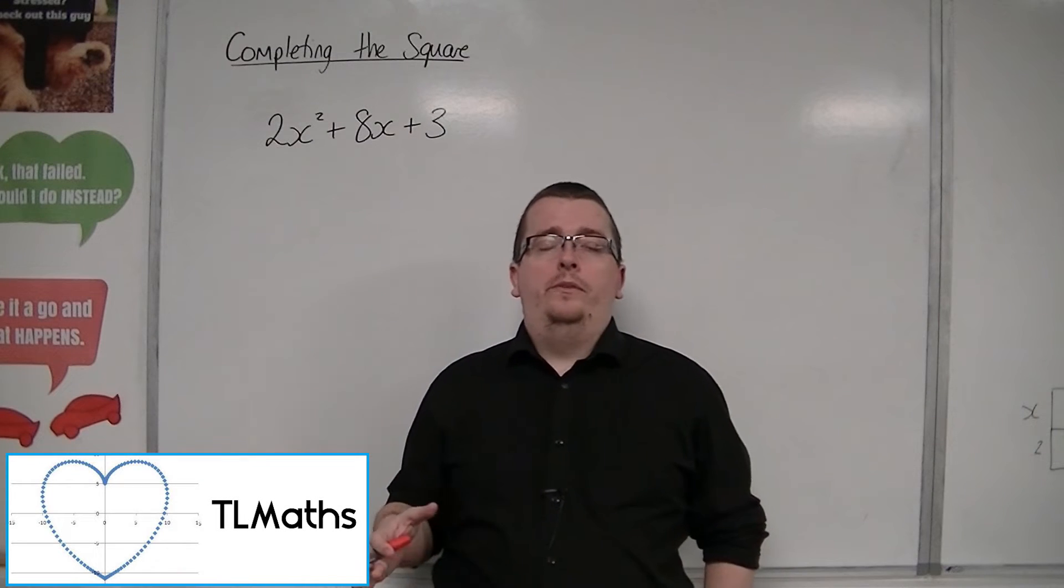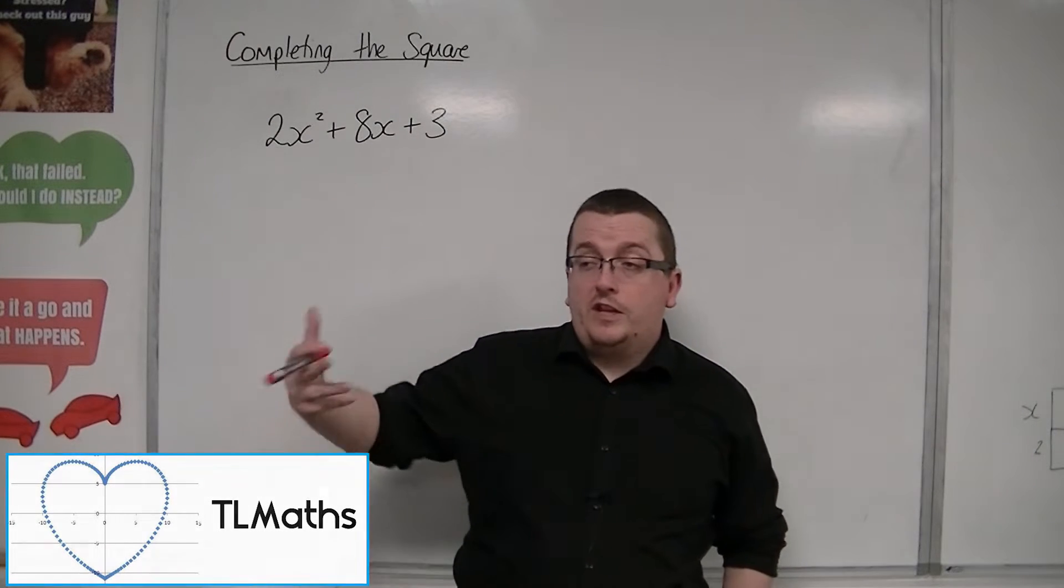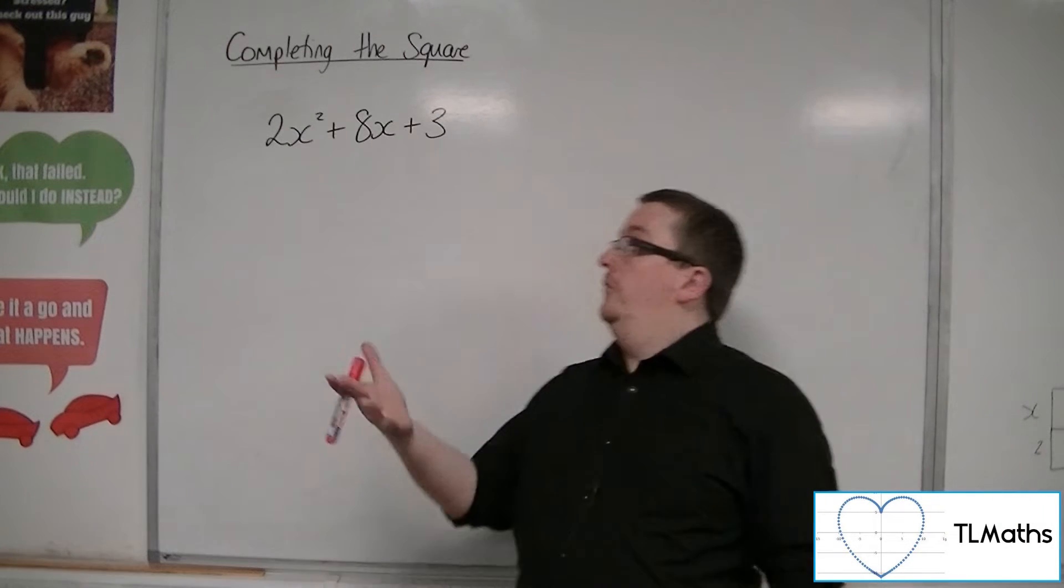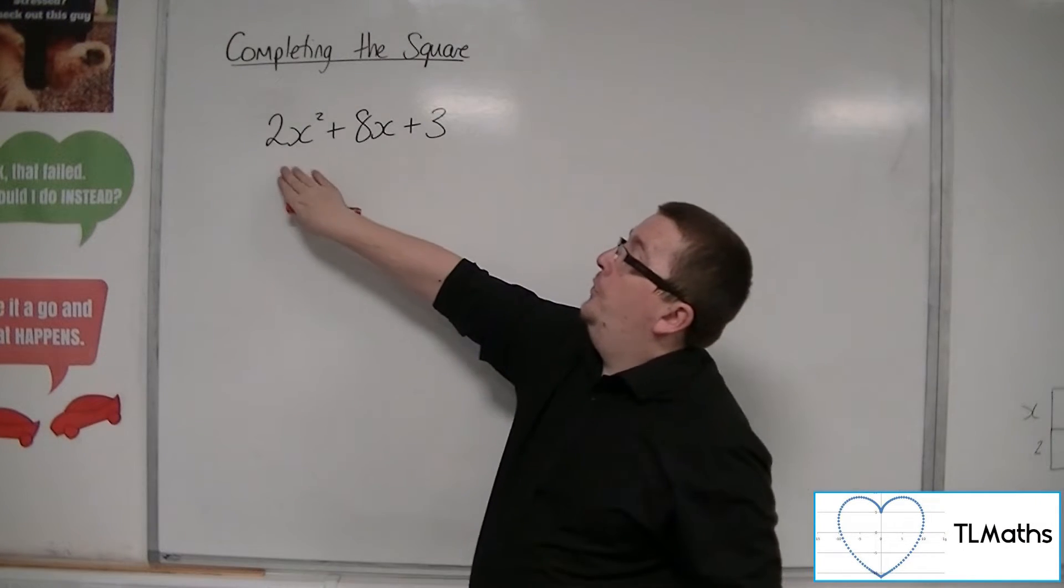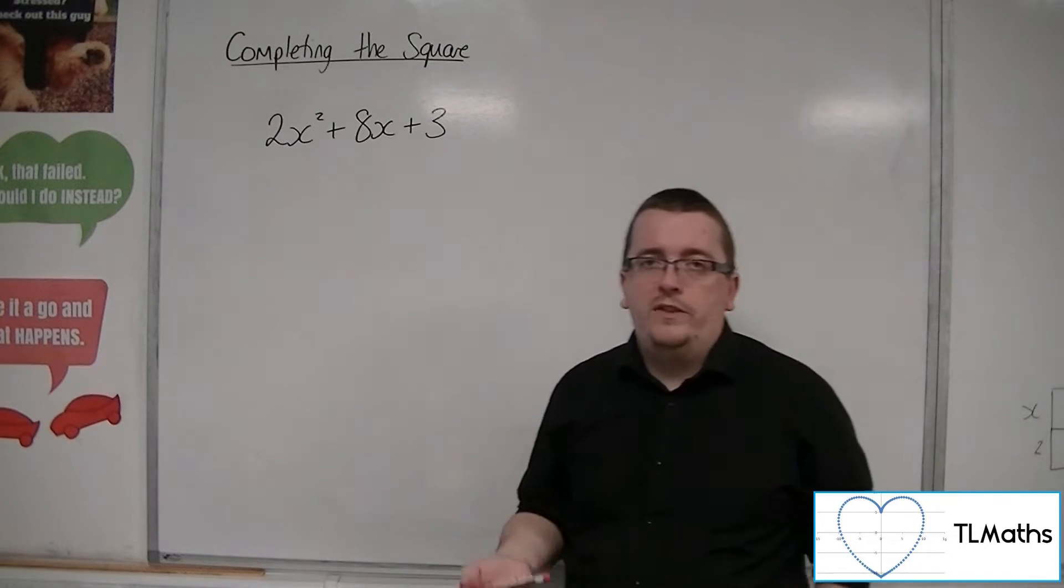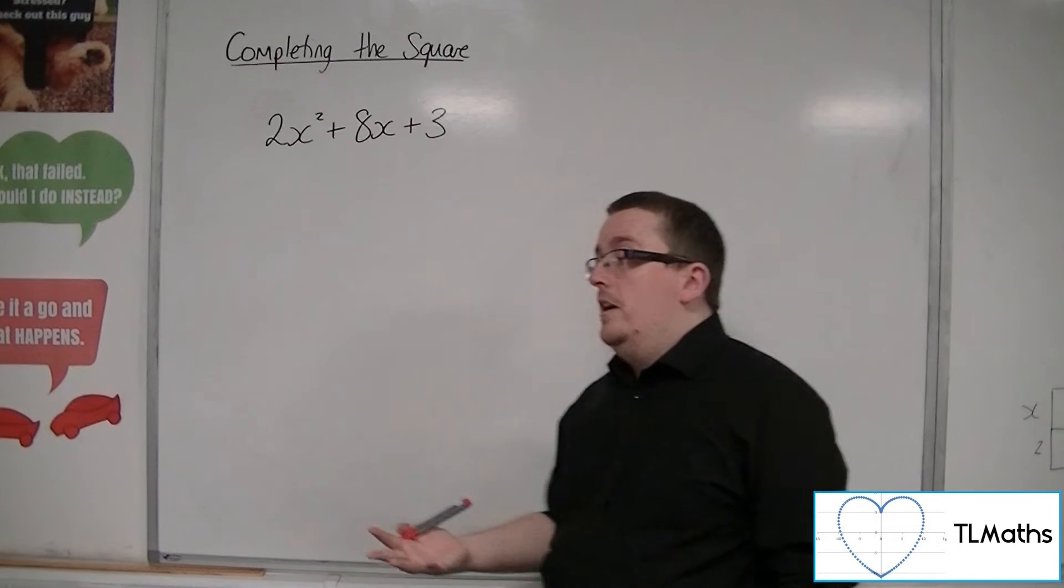So the problem becomes that if I put the coefficient of x squared to be something other than 1, for example a 2 in front of the x squared, can I still complete the square? Now the answer is yes.